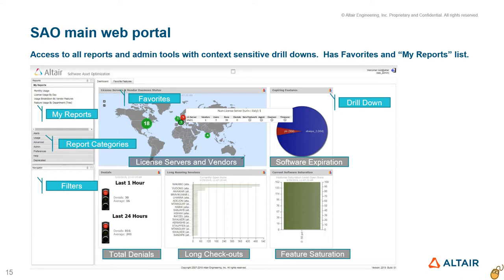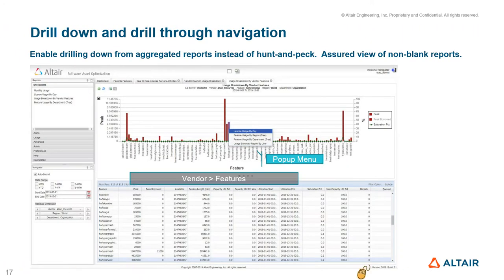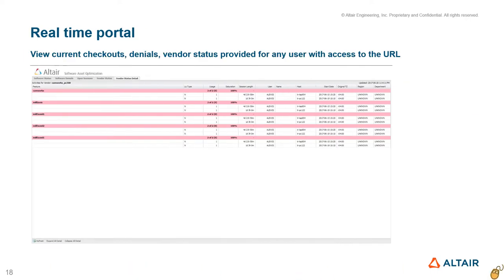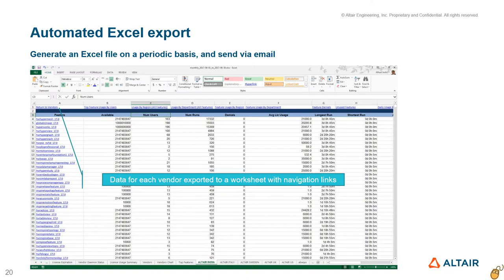The bottom left section hosts a context-sensitive filter list. All reports are displayed in the main panel, with every report hosted in its own tab. The Favorites Dashboard contains user-specific features of interest, providing easy access to six common reports. Most reports provide context-sensitive drill-down and drill-through navigation options. The real-time portal shows current checkouts, software users, denials, and vendor status. SAO also allows for setting up scheduled automated Excel reports with hyperlinks for easy navigation.